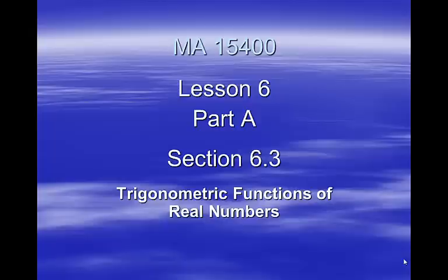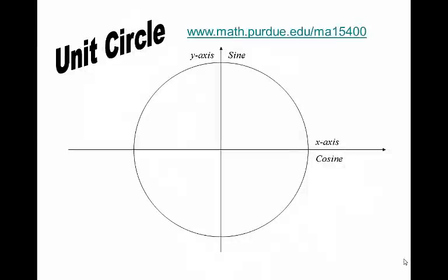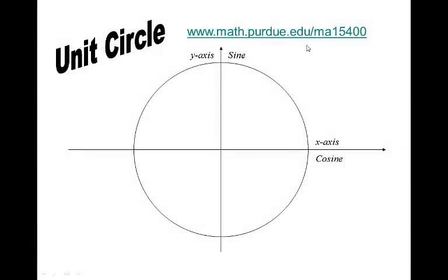This is still Section 6.3, Trigonometric Functions of Real Numbers. Here's the unit circle, and you can see I've got a link to our course webpage. You really want to go out there and click on the course webpage, go to Unit Circle, click on the unit circle and print that out. Your life will be a little better if you have that unit circle in your notes that you can look at.